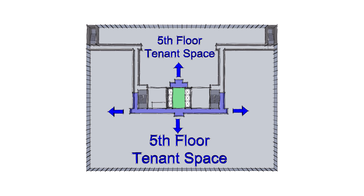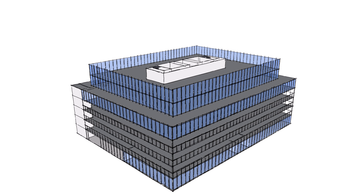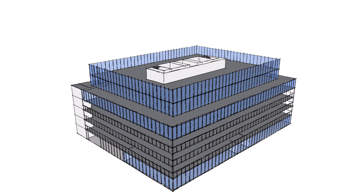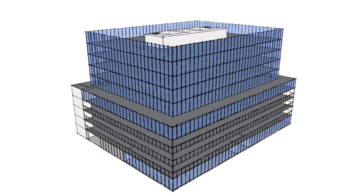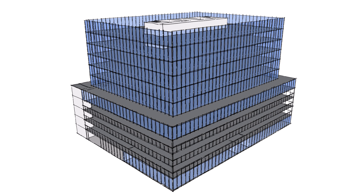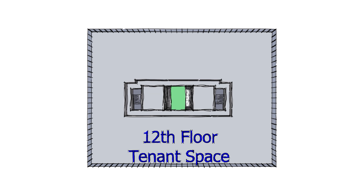However, if the fifth floor was not our final destination, we could have continued and gone up the elevator all the way to the 12th floor. Once on the 12th floor, we get out of the elevators, into the elevator lobby shown in green, then into the corridor shown in blue. And from the corridor, we can access the 12th floor tenant space.